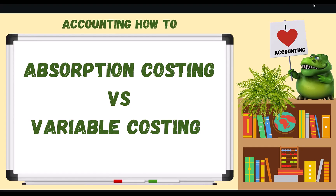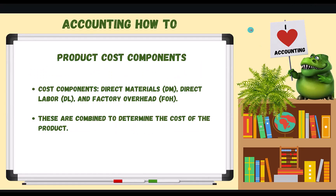Today we're talking about absorption costing versus variable costing. When we talk about managerial accounting and cost accounting — figuring out the cost of a product, what it costs us to make that product — we're looking at three different pieces: direct materials, direct labor, and all those other costs that go into making a product, which we call factory overhead or manufacturing overhead.